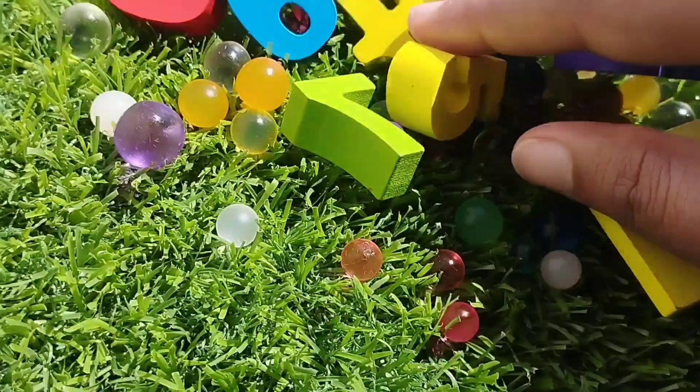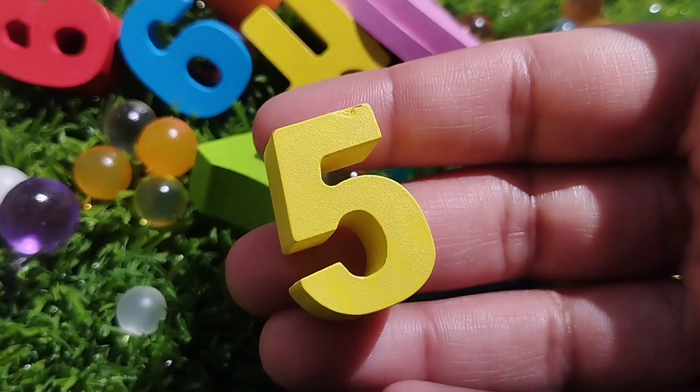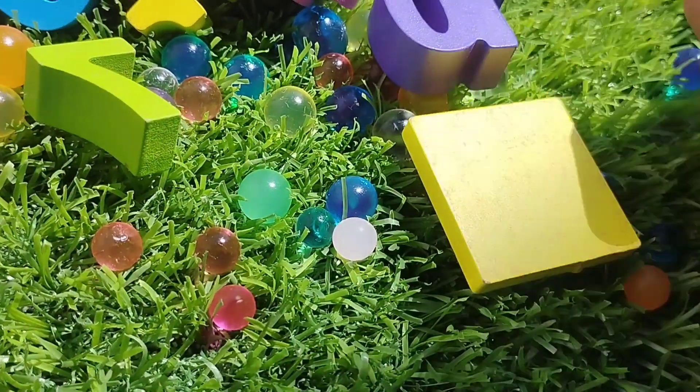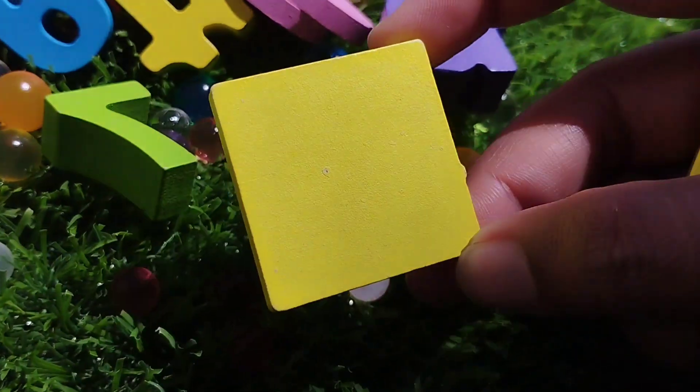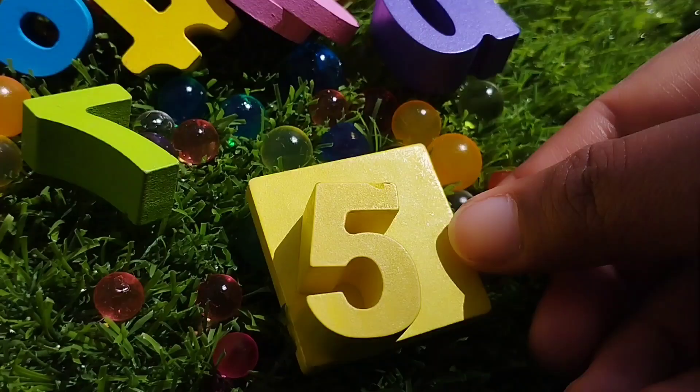The next number is number five. This is number five. It's yellow. This is a square shape. It's yellow.